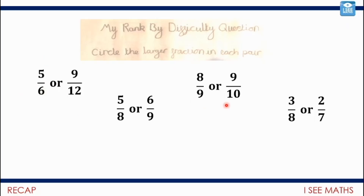Another strategy we used was benchmark measures - how close to zero or how close to one. Nine-tenths is more than eight-ninths because nine-tenths is only one-tenth away from one, whereas eight-ninths is one-ninth away from one, and that's a larger gap. So nine-tenths is more.